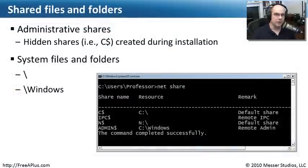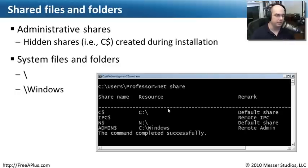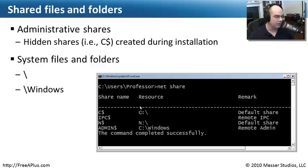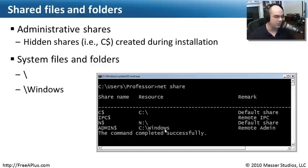Not only are there default users and groups installed on a computer, there's also a set of administrative shares created by default. They're hidden shares, which means they have a dollar sign after them. If you go to your machine and type 'net share' at a prompt, it will show you all these shares. This machine has C$ for the C:\ root directory, a remote IPC share, an IPC$ share, and Admin$ for the C:\Windows directory for remote administration. If you have the right permissions to log in as administrator, you can access those shares across the network.